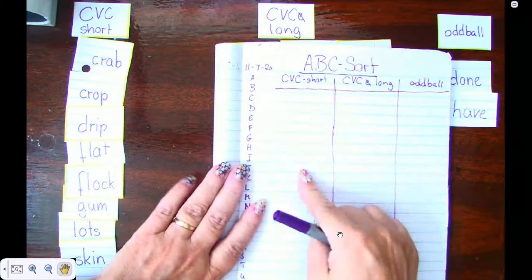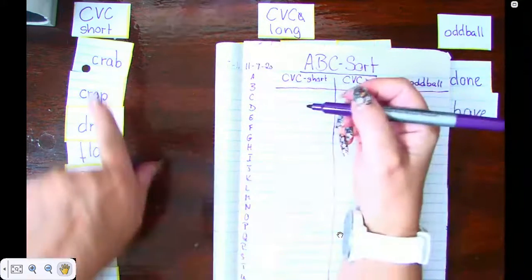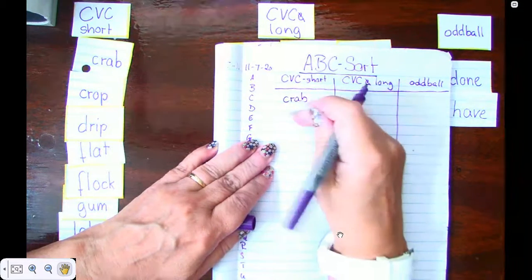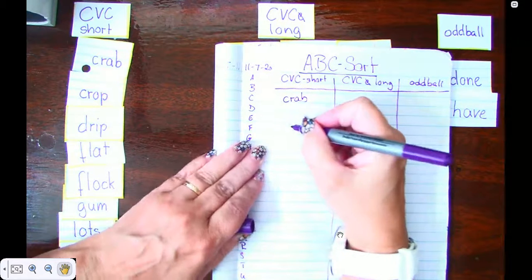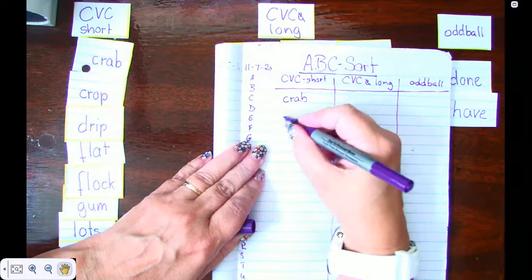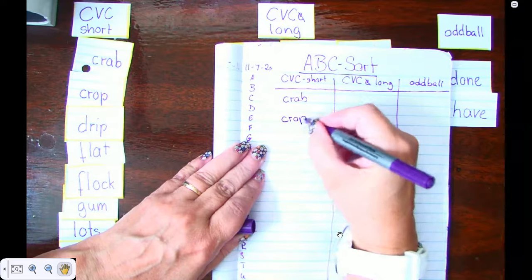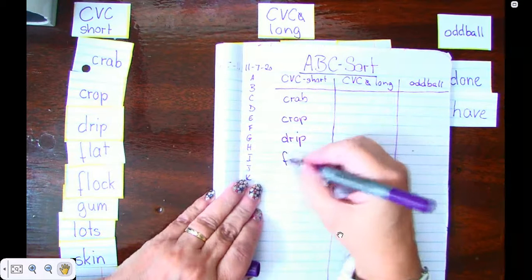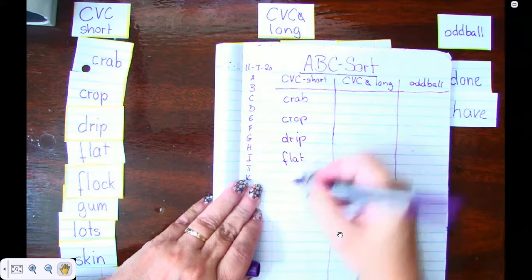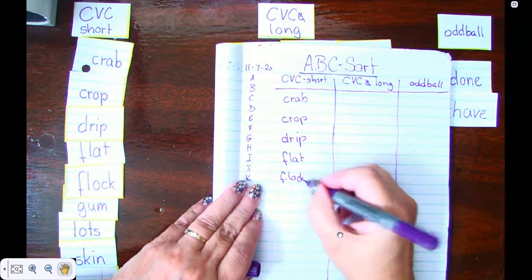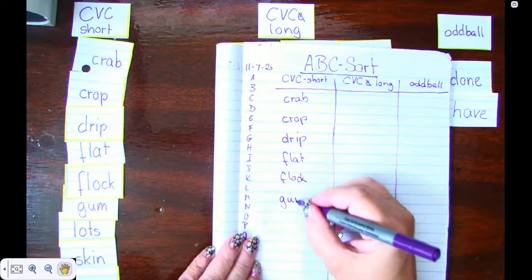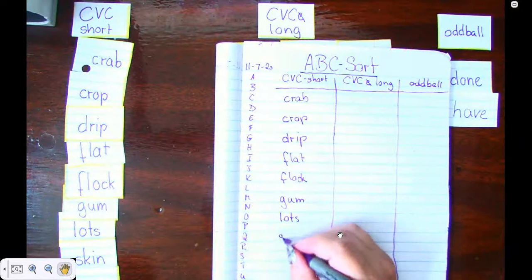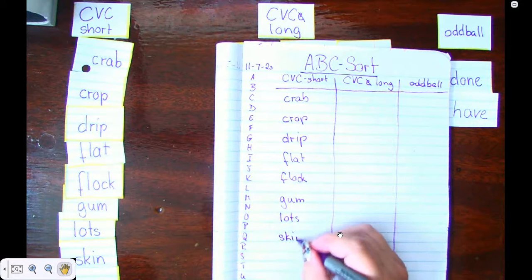So I'm gonna start with crab and remember we're skipping a word so that our low lying letters and our tall letters don't interfere with each other. Crop, drip, flat, flock, gum, lots, skin, and wax.